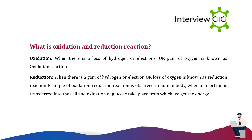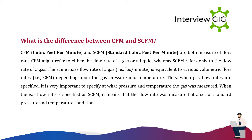What is an oxidation and reduction reaction? Oxidation occurs when there is a loss of hydrogen or electrons, or a gain of oxygen. Reduction occurs when there is a gain of hydrogen or electrons, or a loss of oxygen. An example of an oxidation-reduction reaction is observed in the human body when an electron is transferred into the cell and oxidation of glucose takes place, from which we get energy.